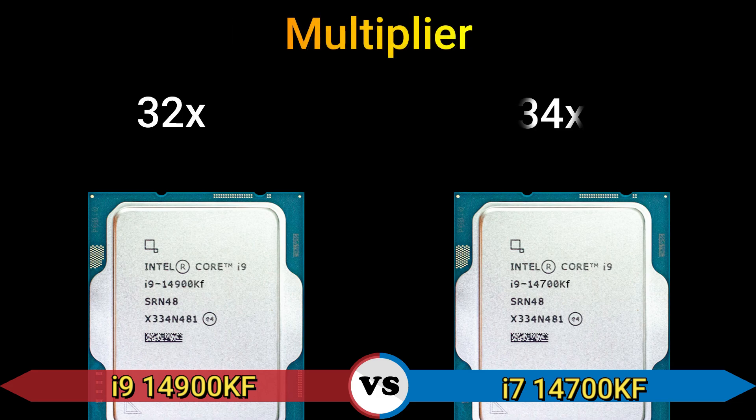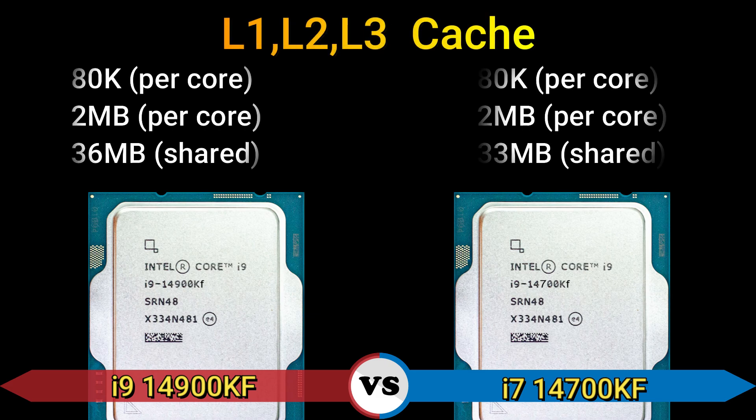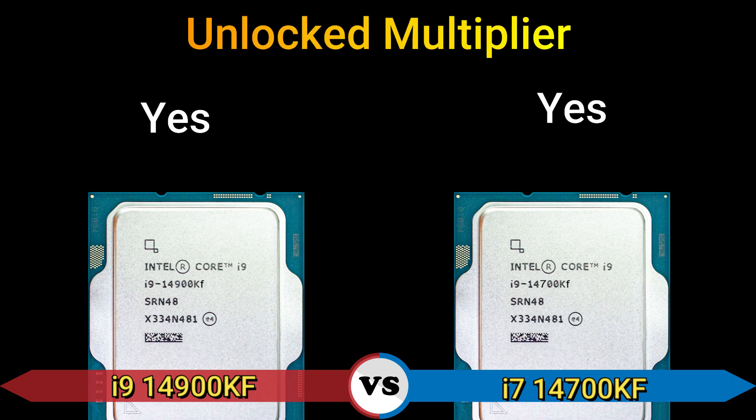Multiplier: 32x and 34x. L2 cache: 2 MB per core. L3 cache: 36 MB shared and 33 MB shared. Boost frequency: 5.6 GHz. Unlocked multiplier: yes.